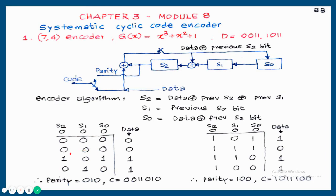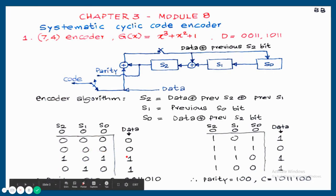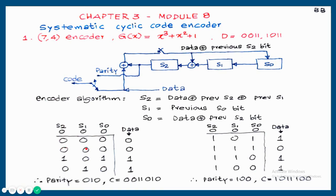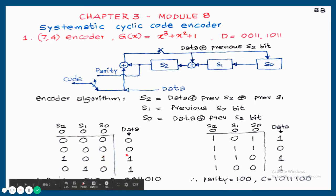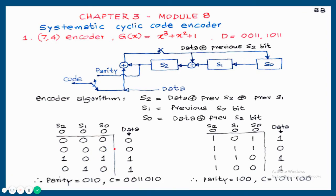Next, data is 1. S2 = 1 + 0 + 0 = 1. S1 = previous S0 = 0. S0 = 1 + 0 = 1. For the next row, data is 1, previous S2 is 1, previous S1 is 0: S2 = 1 + 1 + 0 = 0. S1 = previous S0 = 1. S0 = 1 + 1 = 0. After the 4th bit, the parity bits in S2, S1, S0 are 0, 1, 0.